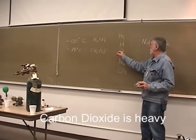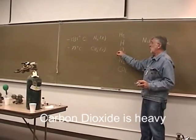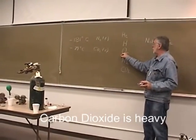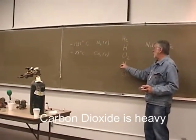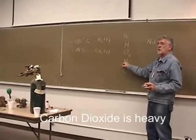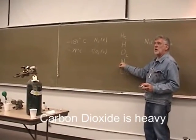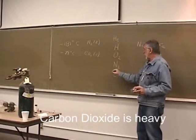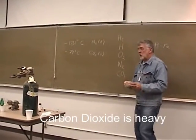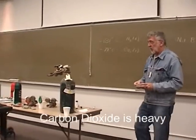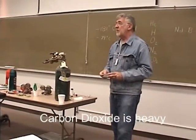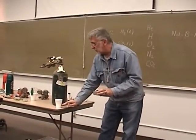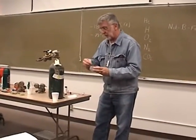And if you look at air — oxygen is 16 and 16, which is 32, and nitrogen is 14 and 14, which is 28 — both of which are lighter than carbon dioxide. So carbon dioxide is heavy, and it tends to settle at the bottom.